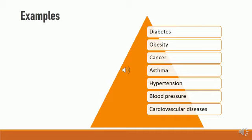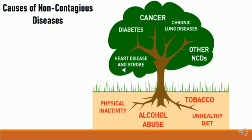Some examples of non-contagious diseases are diabetes — in other words, sugar — obesity, cancer, asthma, hypertension or blood pressure, and certain cardiovascular or heart diseases. These diseases are non-separable and non-infectious.